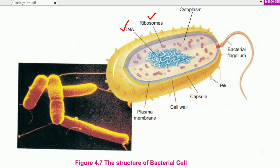Here is the purple line — this is the plasma membrane. Then the blue line is our cell wall. Then the yellow line is the capsule. The blue area visible on the surface is called cytoplasm.